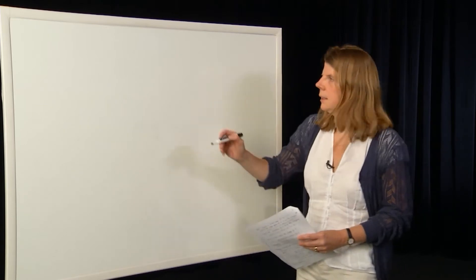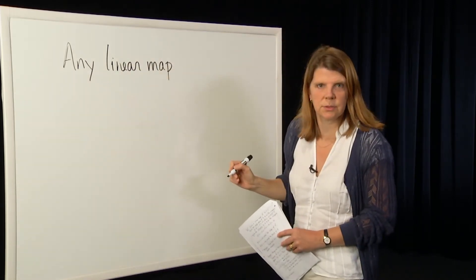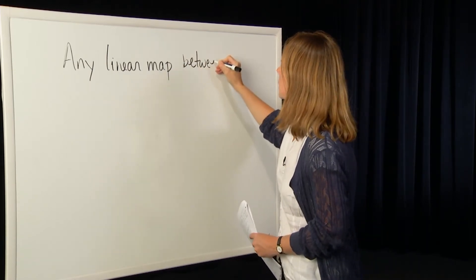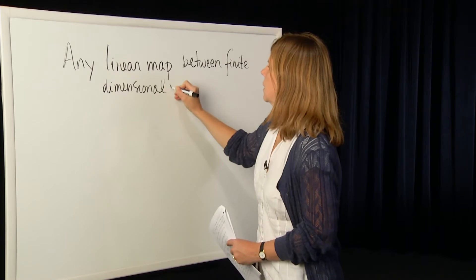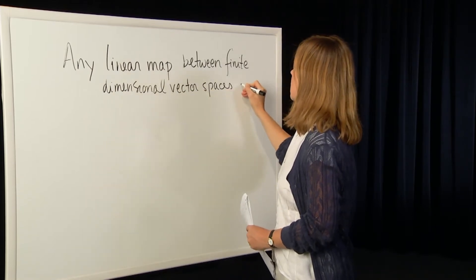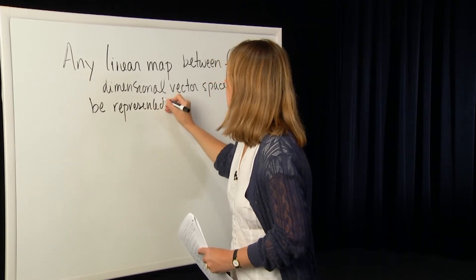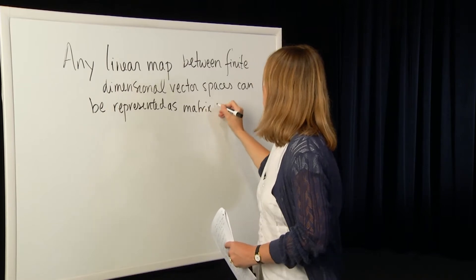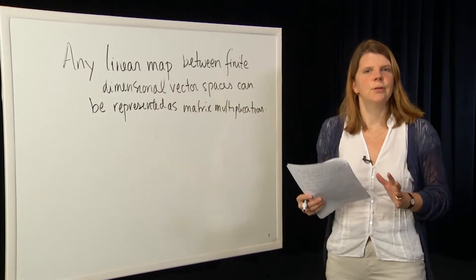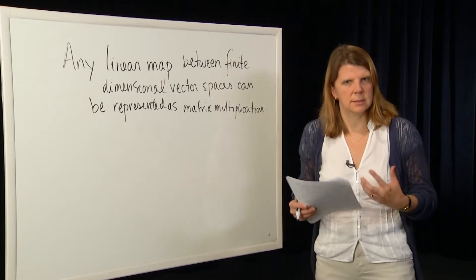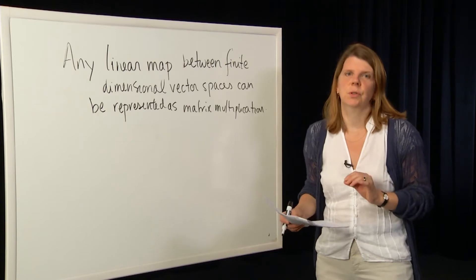Any linear map between finite dimensional vector spaces can be represented as matrix multiplication. This is actually a very useful fact because it allows us to turn what may be quite abstract definitions of maps — as long as they're linear and as long as they're operating between finite dimensional vector spaces — into matrix multiplication, which is easy.